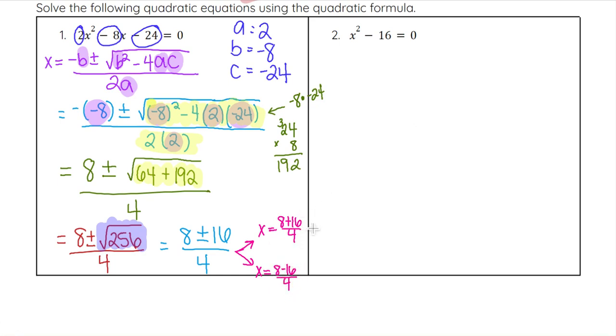8 plus 16 over 4 is 24 over 4, which equals 6 as one solution. 8 minus 16 is negative 8 divided by 4, which is negative 2 as our second solution. So x equals 6 and x equals negative 2.